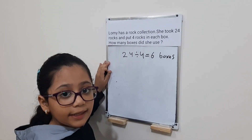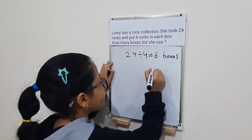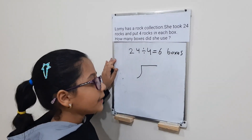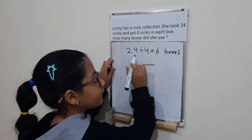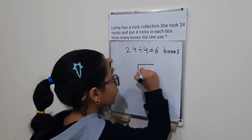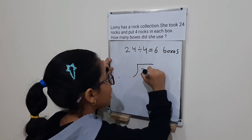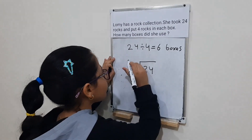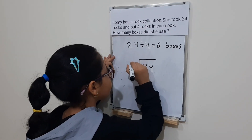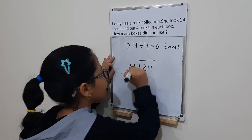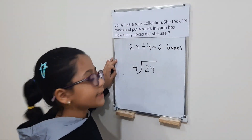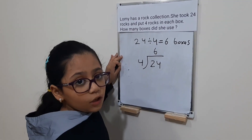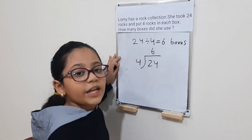We will make it in the vertical way: 24, which is the dividend, goes down; four, which is the divisor, goes next to the 24; and the quotient, which is six, goes up. You can choose any way. Bye!